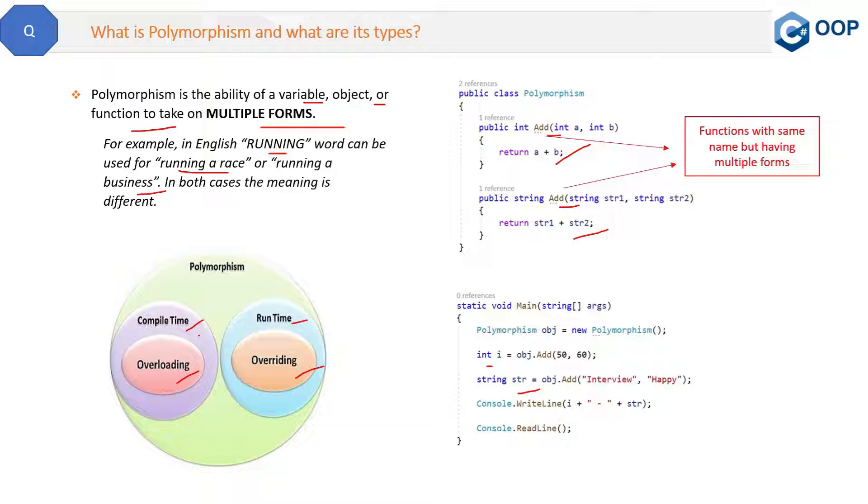So why is overloading called compile time? Because at the compile time, your .NET Framework knows that these two Add methods are different. Their name is same but they are different methods doing different functionalities. They know this thing at the compile time only. That's why overloading is compile time.